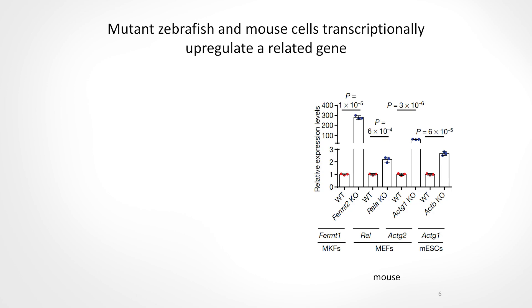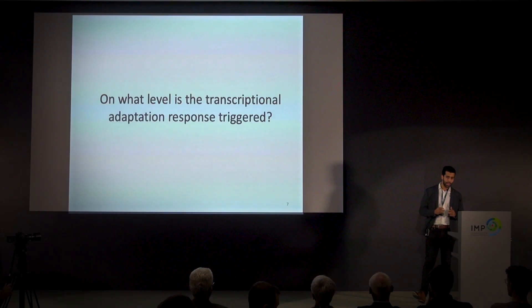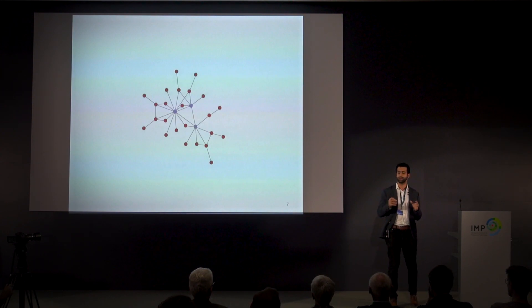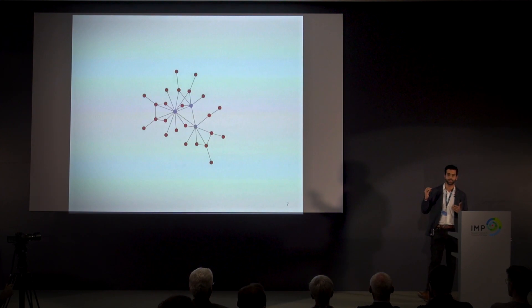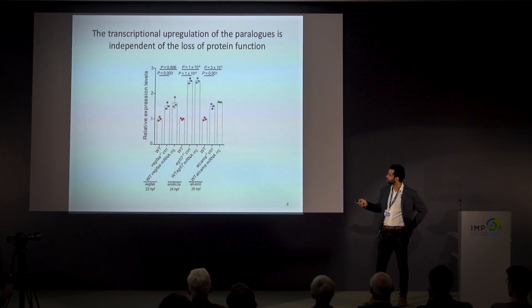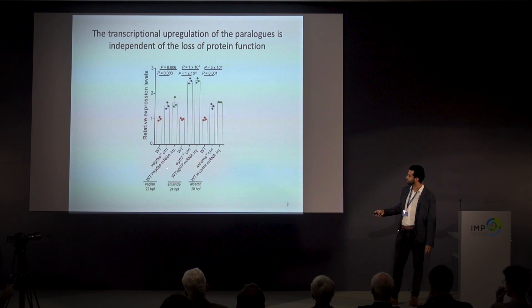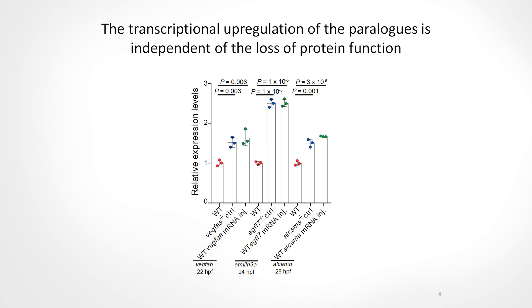The first thing I asked myself was: on what level is this transcriptional adaptation response triggered? The first obvious candidate was protein feedback loops — you have your protein missing in a network, disrupting it and leading to upregulation of other genes. But if that were the case, rescuing these mutants by providing wild-type RNA or protein should dampen those upregulation levels. However, this was not the case. If we rescue these mutants, the upregulation levels stay maintained. For example, in VEGF-A mutants that normally upregulate the paralog VEGF-AB, injection of wild-type VEGF-A mRNA still maintains the upregulation of VEGF-AB — and we observed the same in all models studied.